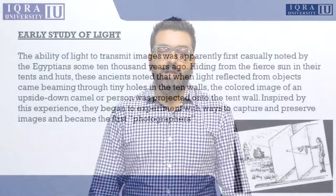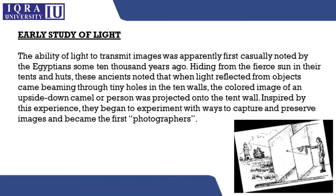Moving to the early study of light, we focus a little on the Egyptian civilization time period. People used to live in tents, and inside the tent there were small holes. Through those holes, a tiny ray of sunlight passed in, and on the opposite side of the tent an upside-down image was projected.